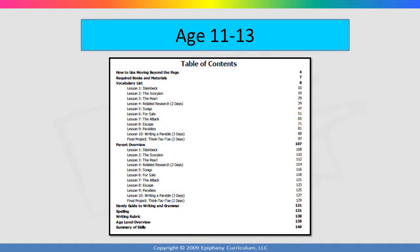Let's start by looking at the table of contents. Each unit is about three and a half weeks long. This unit has ten lessons and a final project. Notice that some of the lessons are labeled as two or even three day lessons. Curriculum at this level is student-directed, meaning the primary curriculum is written for your student to follow along and direct his own day. You should always be available as a resource, but you should not have to teach the lessons to your student. Notice on the table of contents that there is a parent overview section containing descriptions of each activity, answer keys, and suggestions for further exploration.